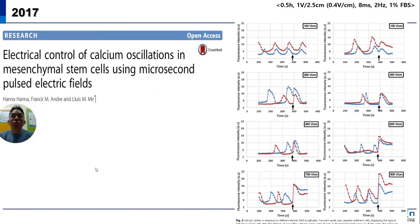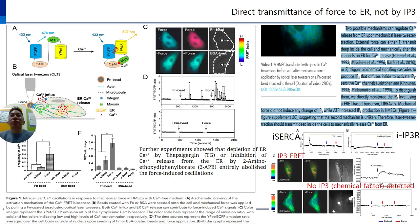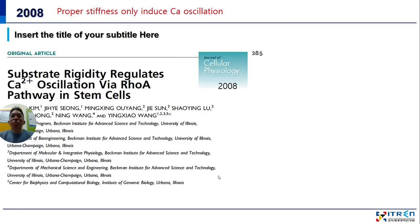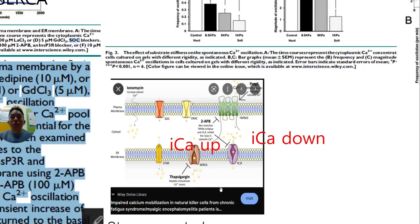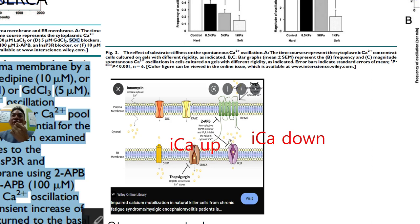For understanding: SERCA influxes calcium from cytosol to nucleus/ER. When they block it, the goal is to deplete the calcium level in the ER because there is no more saving. So while treating the cell, no more ER calcium. When they turn on electrical stimulation, the calcium level of cytosol never goes up — which means ER calcium mediates ES-mediated calcium influx.